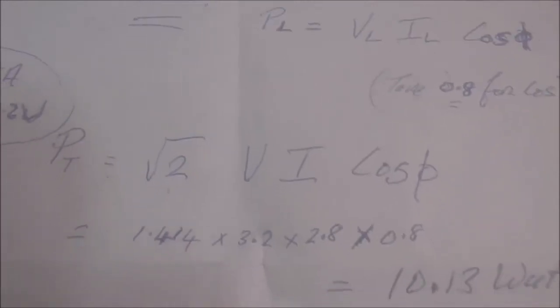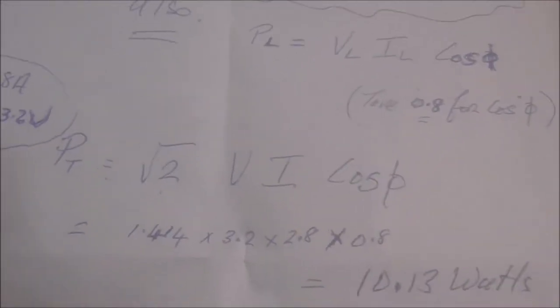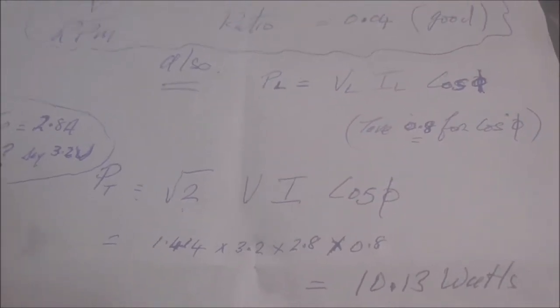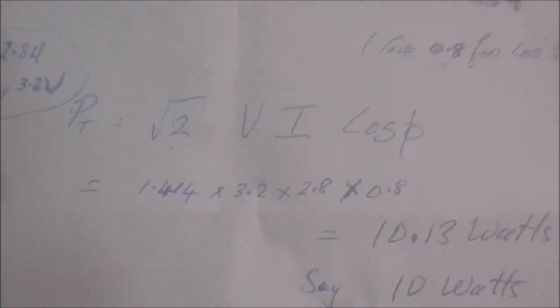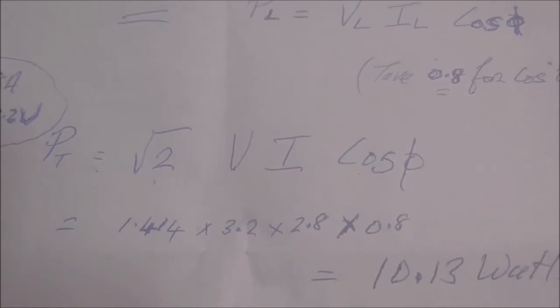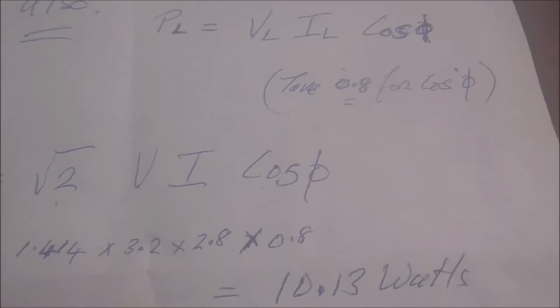So taking that information, I went with my power total, because the stepper motors are two phases, not like a three phase, but they are a two phase. So the square root of 2, which is 1.414, by the voltage, by the current, by the cos θ.